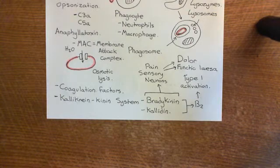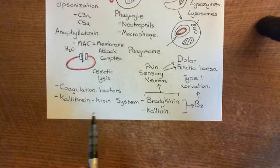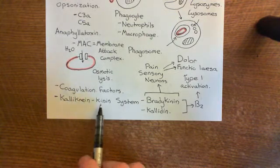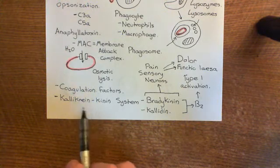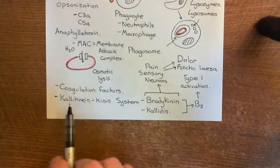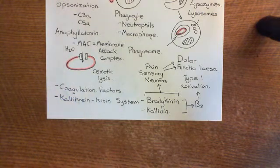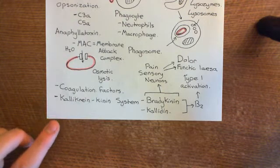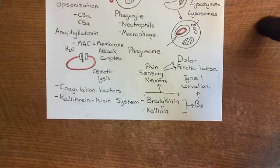The components that begin the kallikrein-kinin system mostly come from the blood: Factor XII (Hageman factor), Fletcher factor — also known as pre-kallikrein — and high molecular weight kininogen. The only component that doesn't come from the blood is low molecular weight kininogen. There is an entire separate video on the kallikrein-kinin system covering it in full.